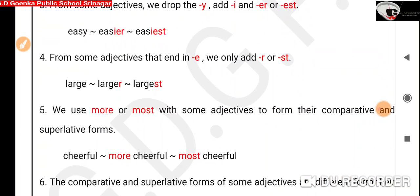Rule number 4: For some adjectives that end in -e, we only add -r and -st. Because the word already has an e, we add -r and -st. For example, large already has an e, so we just add -r to make it comparative and -st to make it superlative. Large, larger, largest.